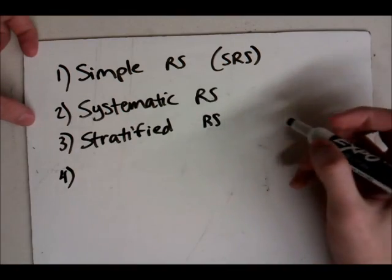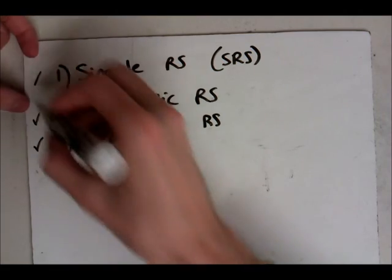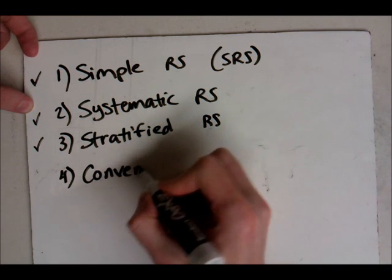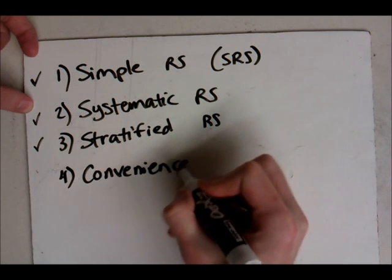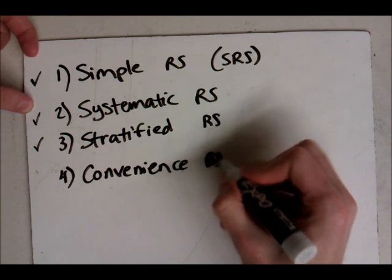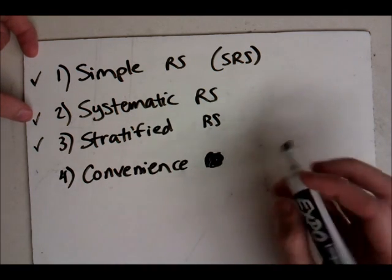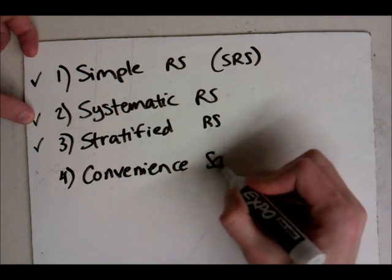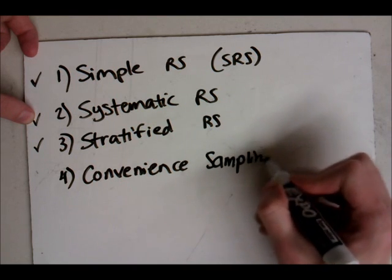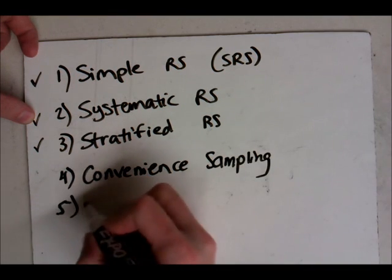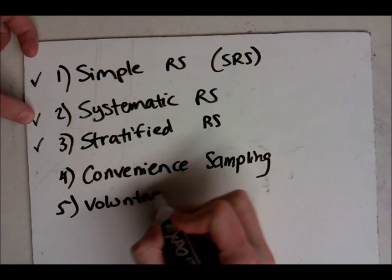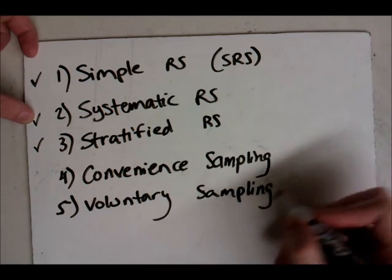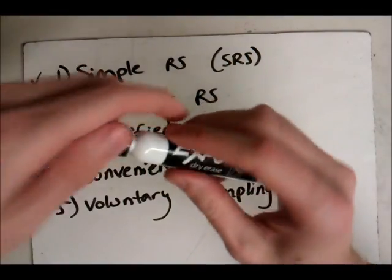So these are the good guys. These are the ones you want to use. There's also a couple bad methods of sampling. For example, convenience, not a good method of sampling. It would just be convenience sampling, not random sampling, which is part of why it's bad, because there's no random to it. And then you've got voluntary sampling. The first three here are good sampling techniques, and the last two are bad sampling techniques.